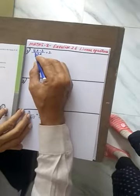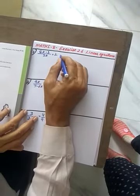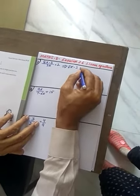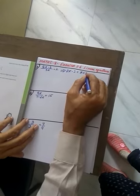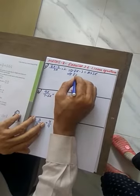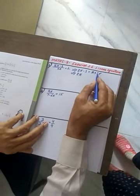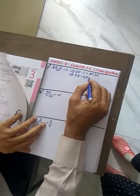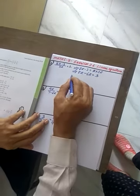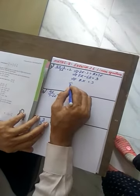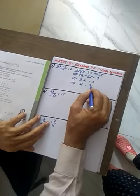Let us read the question first. We have to solve this equation for x. 8x minus 3 upon 3x is equal to 2. This implies 8x minus 3 is equal to 2 into 3x. This implies 8x, and this gets multiplied, becomes 6x. Taken on this side will be minus 6x is equal to 3. This should give you 2x is equal to 3 and x is equal to 3 upon 2.